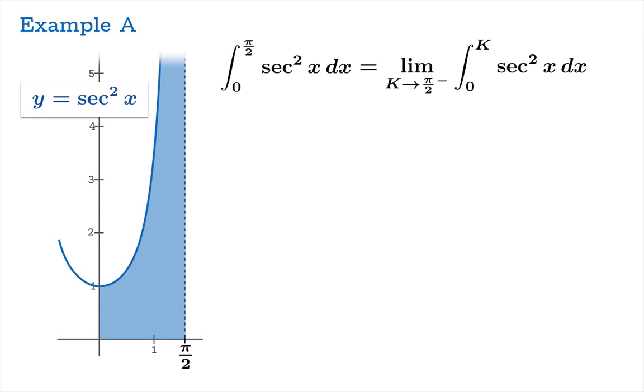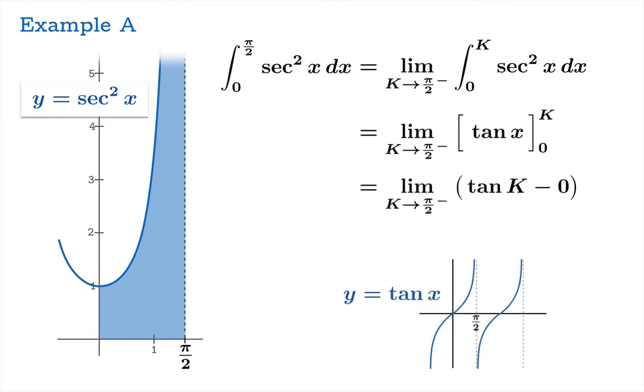Now the antiderivative here of secant squared is tan so we'll take tan k minus tan 0 and then we'll look at the limit of that. Tangent k minus 0 then and if we look at the limiting value of tangent of x as x approaches pi over 2 from the left we'll see that that limit diverges to infinity. So this limit in question here that we're looking at is actually a divergent limit and we get infinity.